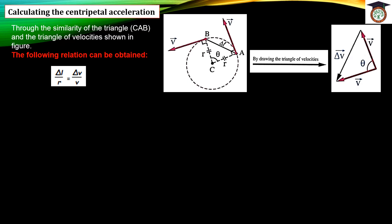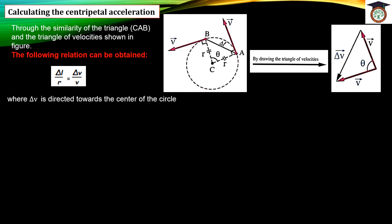From the similarity of the two triangles, we get: delta L (the side in front of angle theta) divided by R (one of the two radii) equals delta V (the side in front of angle theta in the velocity triangle) divided by V (one of the two equal velocity sides). Therefore, delta V equals (delta L / R) times V, where delta V is directed toward the center of the circle.